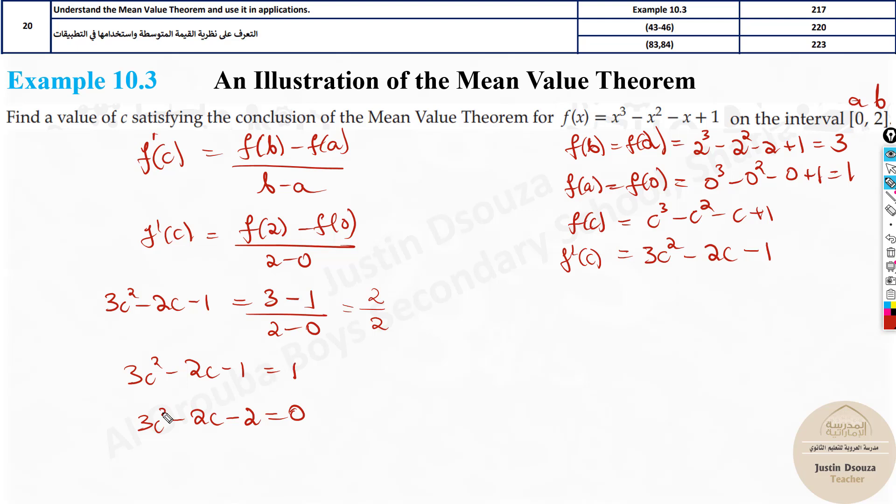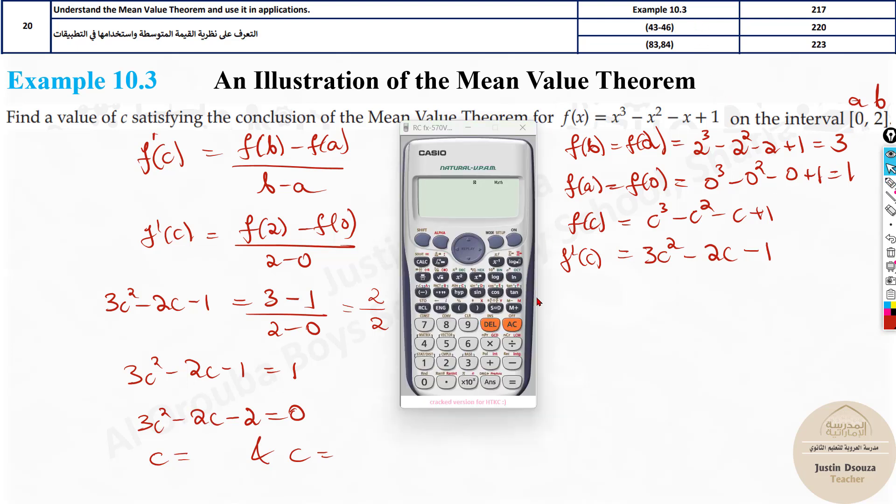Now, this is the quadratic equation. Let's find c. It will be two values of c. You can just use the calculator mode phi 3. It's fine to use calculator over here. Otherwise, you have to just do factoring, which will just take a long time. So just use the calculator here. What you do is press mode phi and 3. And then we have to just put this 3, 2, minus 2 and minus 2. What's the value of c? It is 1.21 and minus 0.54. Now, can you take this answer?